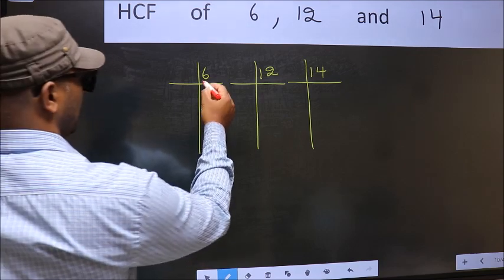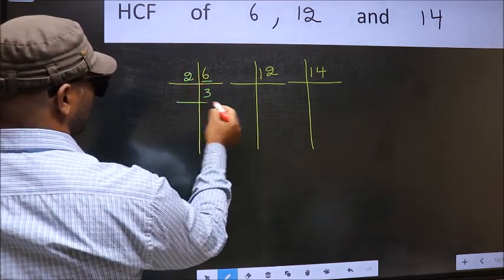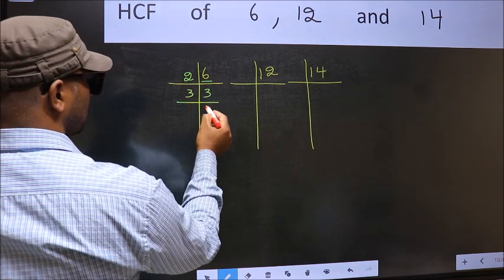Next, now here we have 6. 6 is 2, 3, 6. Now 3 is a prime number, so 3 ones 3.